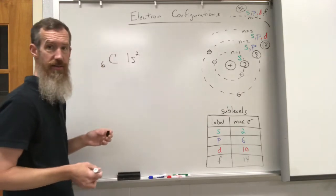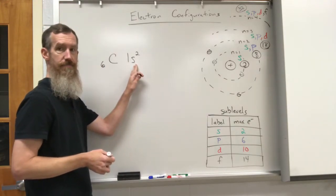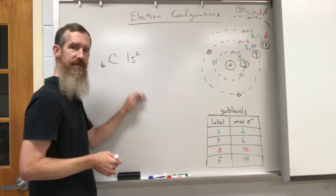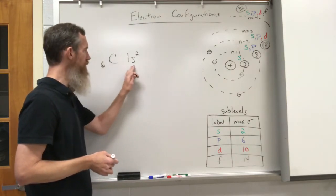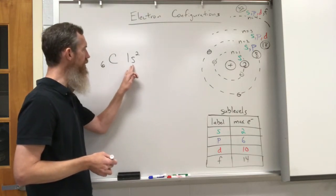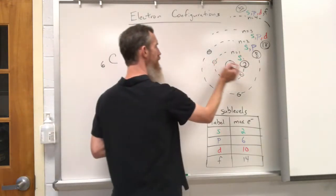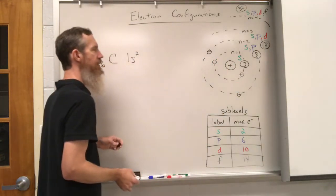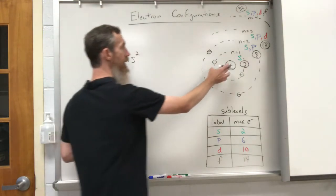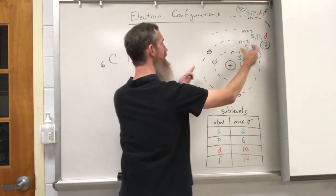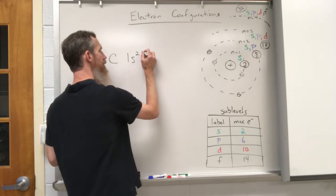This superscript represents the number of electrons. I'm not going to do the orbital notation yet, but let's go through this. We use those two electrons — one, two — for the first energy level, and now that's filled. Now I have to start going into the second energy level, so I write a two.